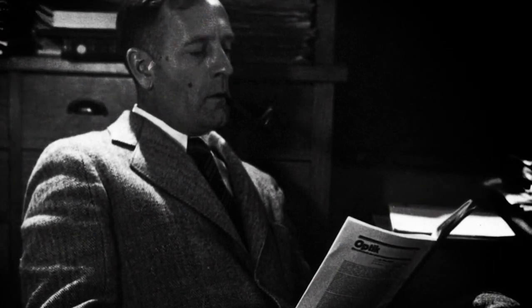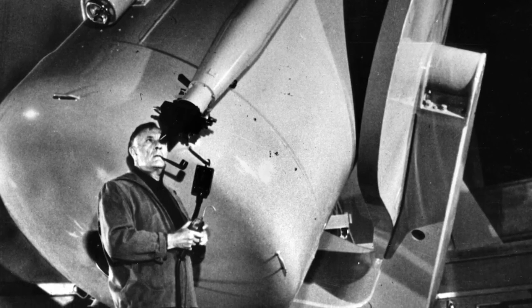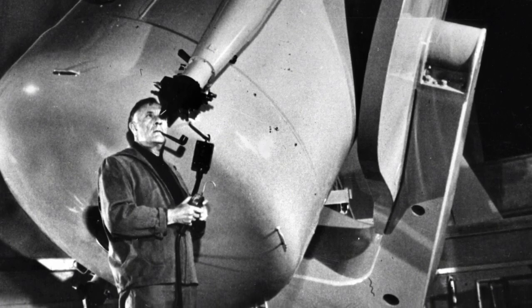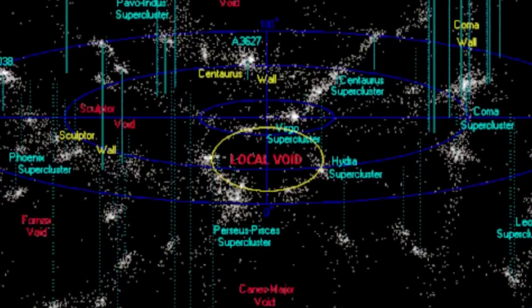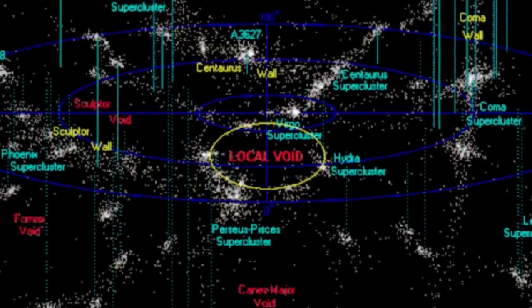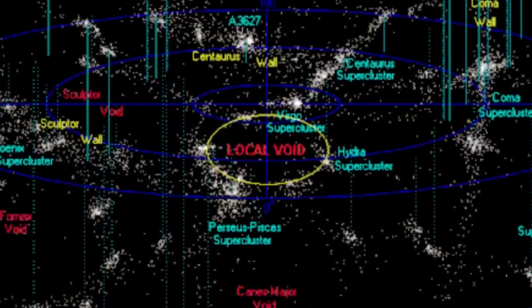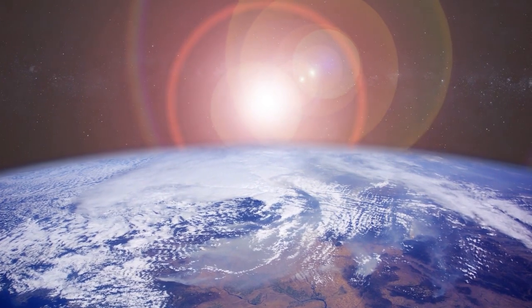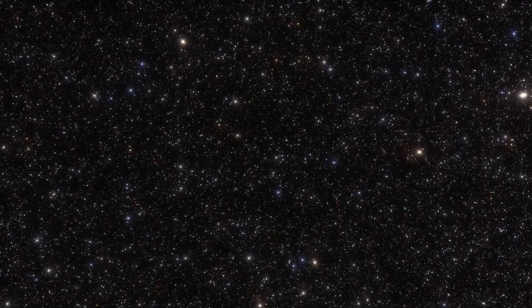Scientists typically calculate the Hubble constant using observations that don't extend beyond 2 billion light years, meaning that many of these observations are conducted within the KBC supervoid. Since the universe's expansion rate has changed over time, measurements within this void reflect a localized accelerated expansion rather than the global average.